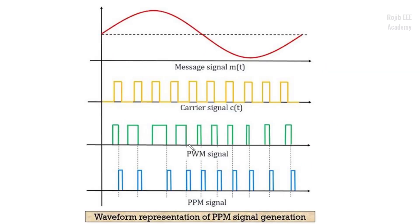In Pulse Width Modulation (PWM), we have a message signal and a pulse carrier signal. When the message signal amplitude is higher, the pulse width is wider. When the message signal amplitude is lower, the pulse width is narrower. So the pulse width varies proportionally with the message signal amplitude.